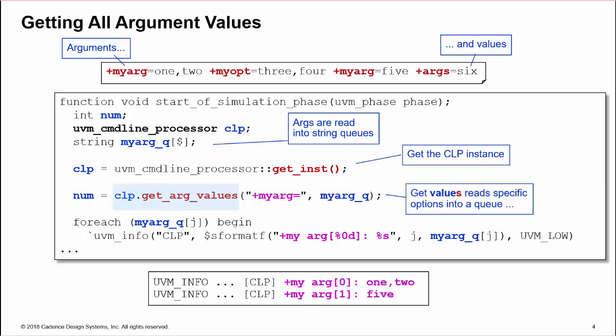Then we can use the getArgValues method of the processor instance. This reads all the specifically named command line arguments, as defined by a string, and stores them in a queue. The method returns the number of arguments found.